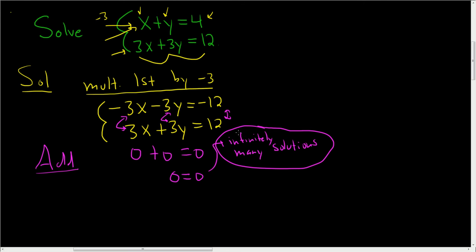Now that is an acceptable answer, but let's take this a bit further. The reason we got zero equals zero is because both of these equations are exactly the same. We basically subtracted them and got zero, so they're equal.